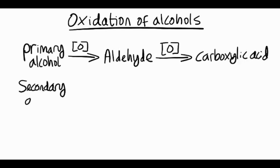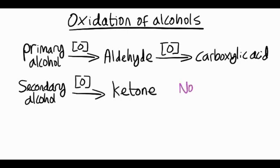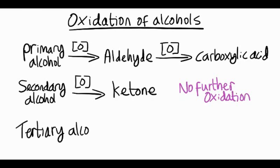With a secondary alcohol, it can be oxidized to a ketone, but there's no further oxidation possible using acidified potassium dichromate. And with a tertiary alcohol, it won't be oxidized at all. So let's try applying this to a few different examples.